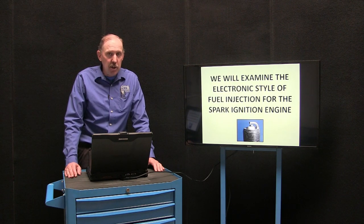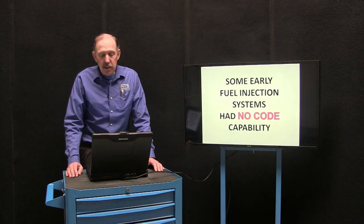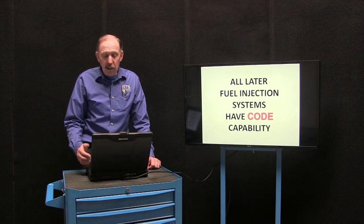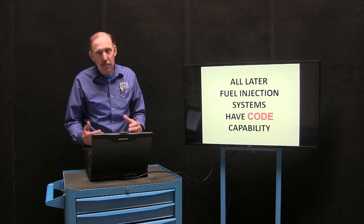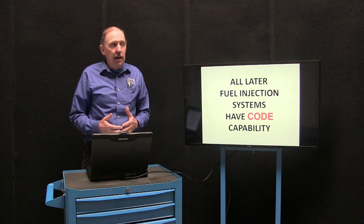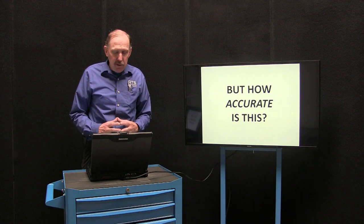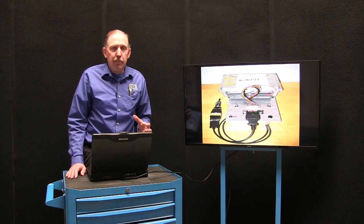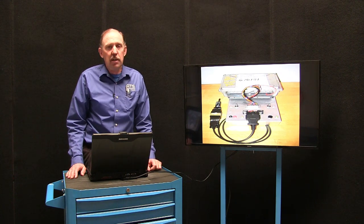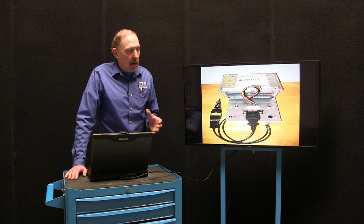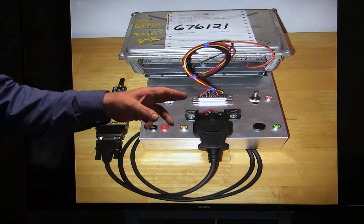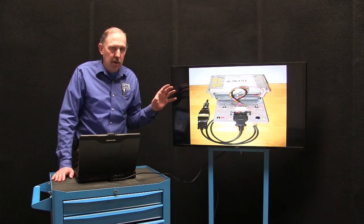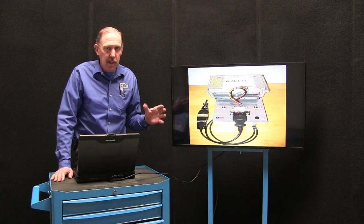We want to cover the spark ignition internal combustion engine during this presentation. In some early fuel injection systems, they didn't have codes and they didn't even have data streams. All the later injection systems have some code capability as well as some data stream ability. But how accurate are the codes in these systems? When we make scan tools, we have to backwards engineer the protocol and the timing sequences so we can talk to these units. I've gone to the wrecking yard and gotten hundreds of control units, wired them for power, grounds, and comm lines — all you need on a computer to talk to that computer — and then I can communicate with it.